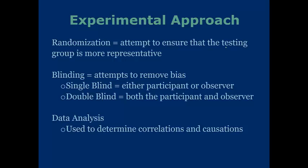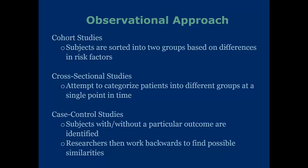Blinding is another attempt to remove bias. A single blind is when either the participant or the observer is blinded, so they don't know whether they're the control or the experimental group. A double blind is when both participant and observer are blinded. Data analysis can take form in many different ways, and we covered a lot of that in the psychology portion, so I won't go into it in too much detail here. Now let's go to the observational.